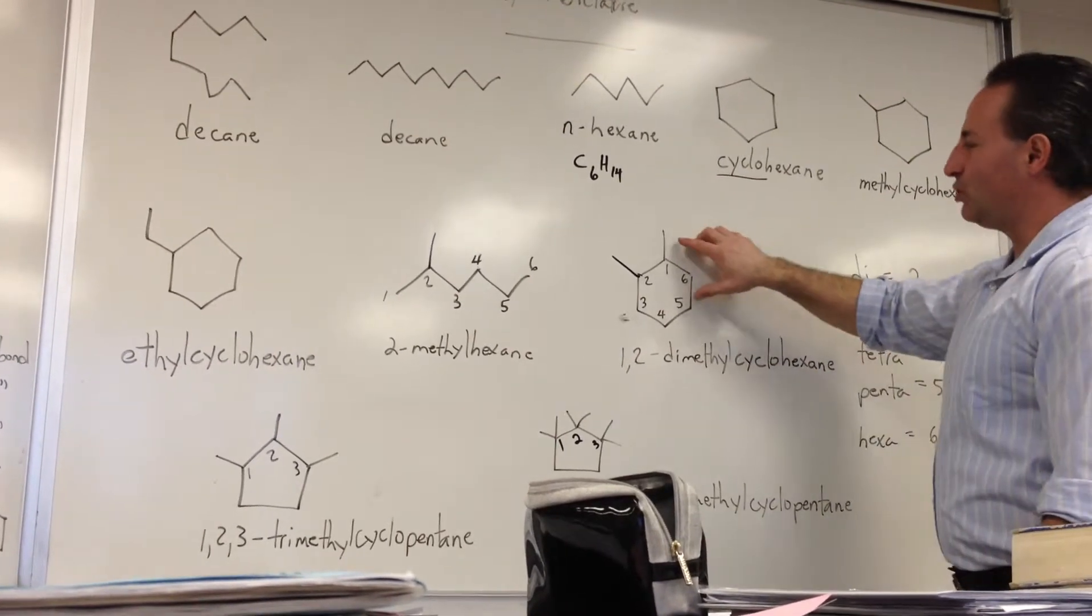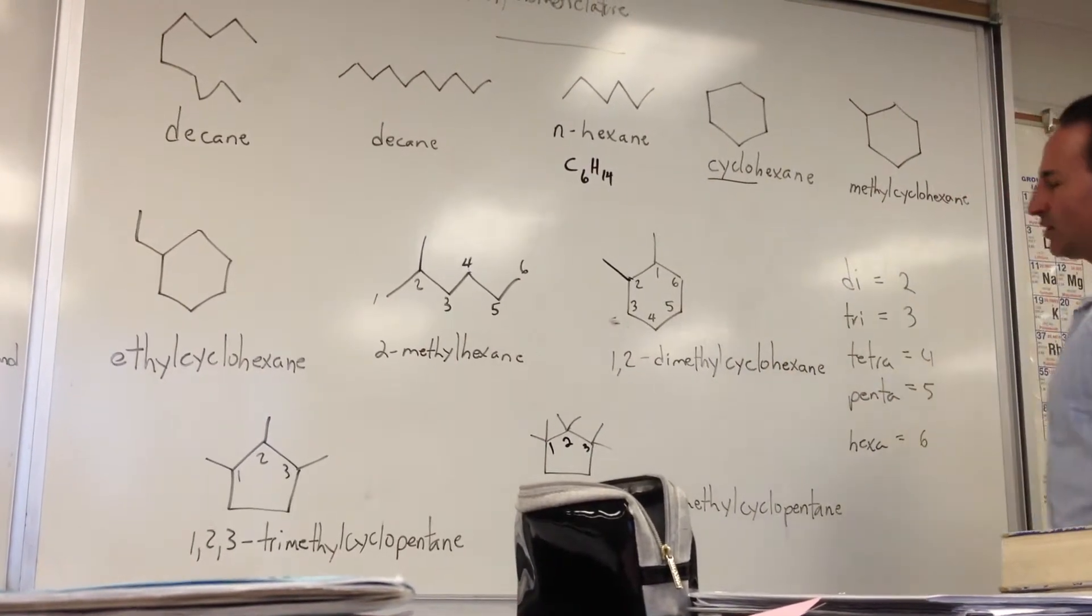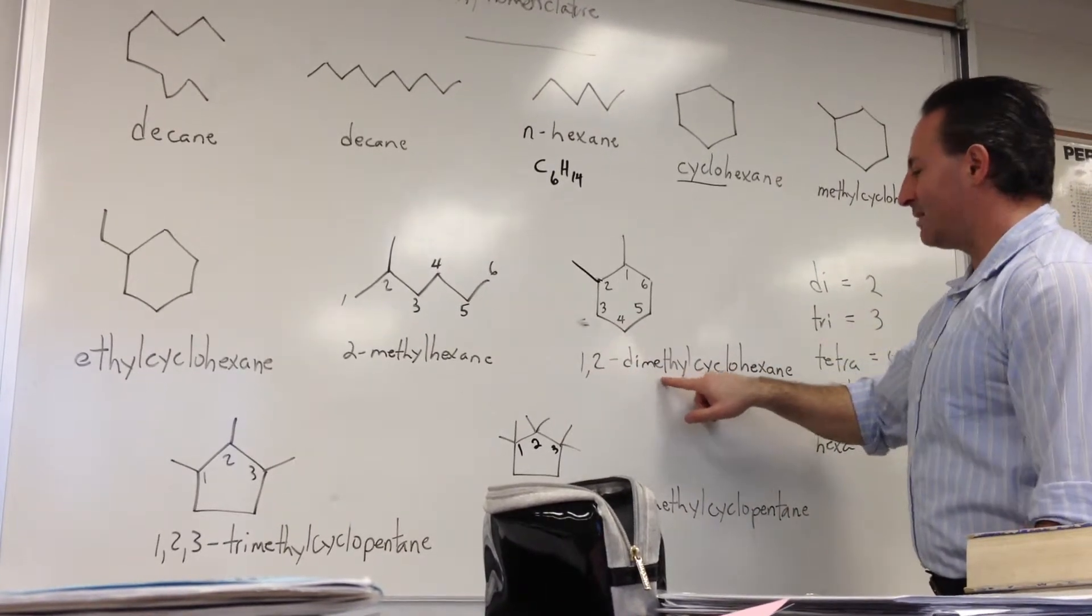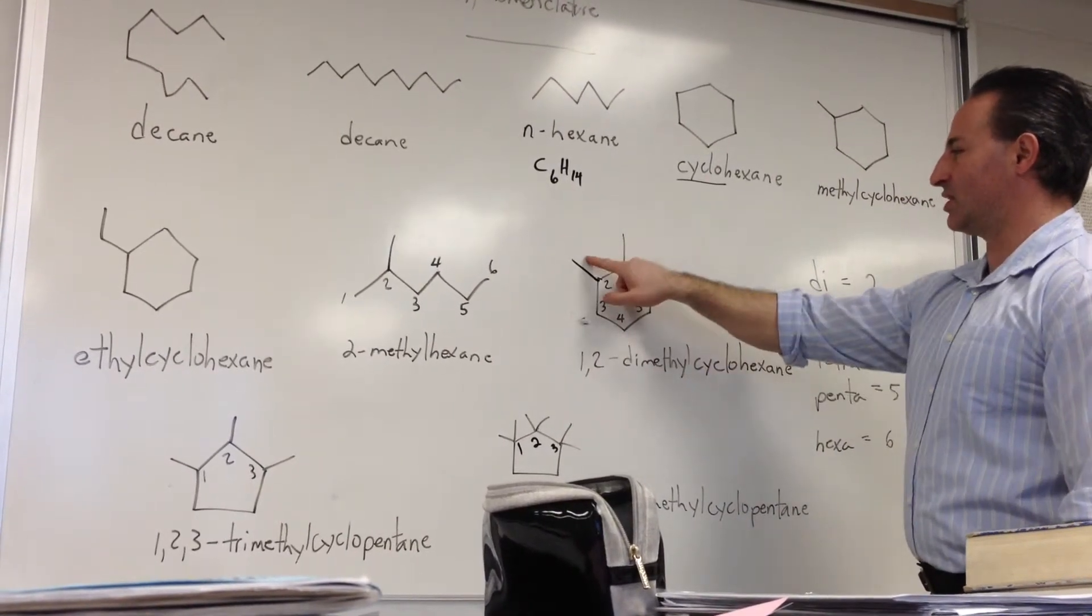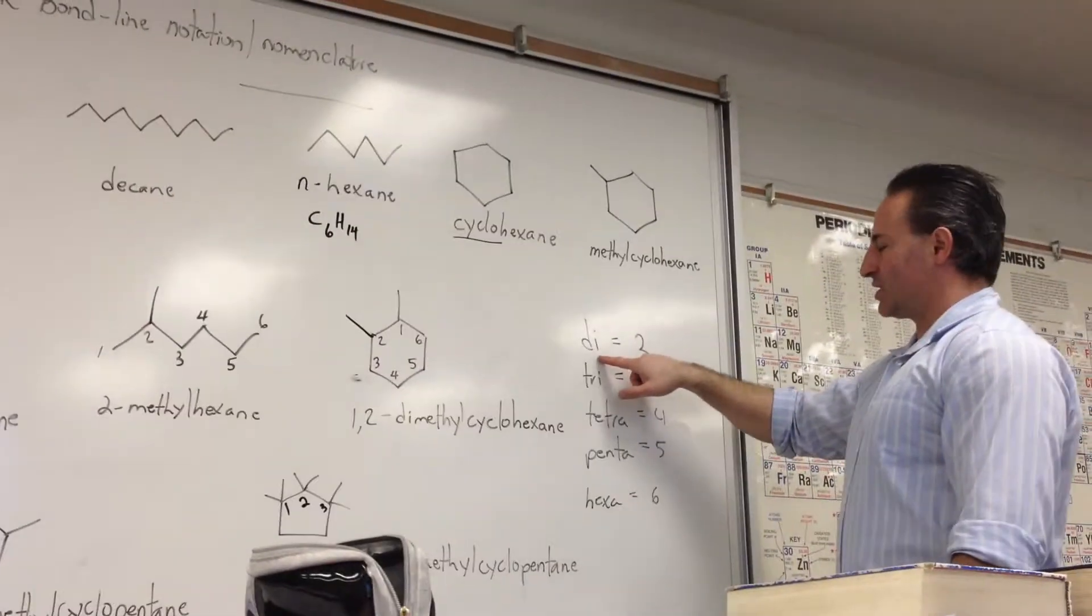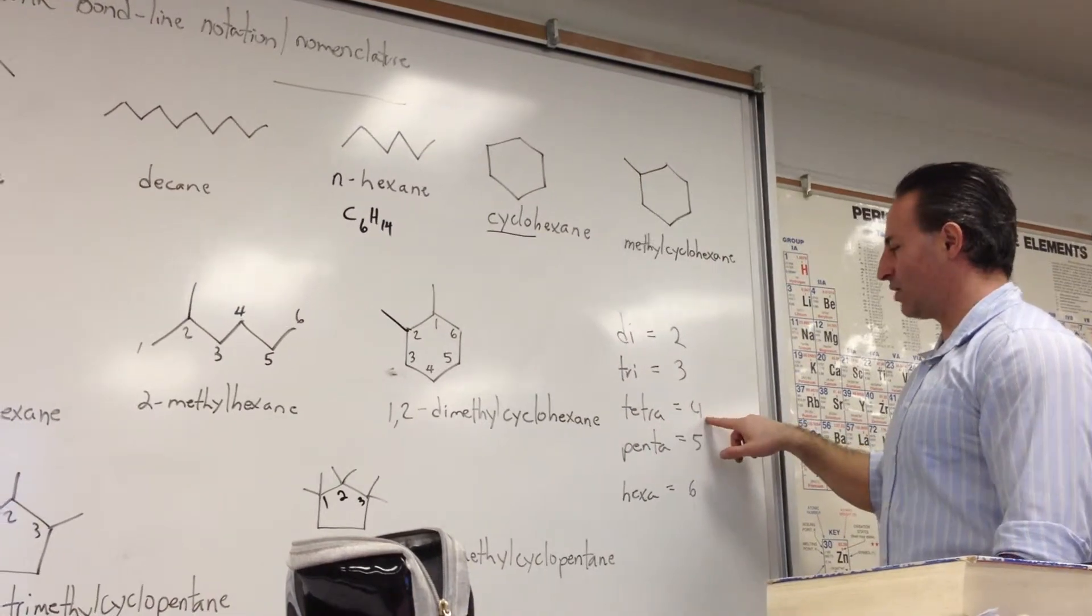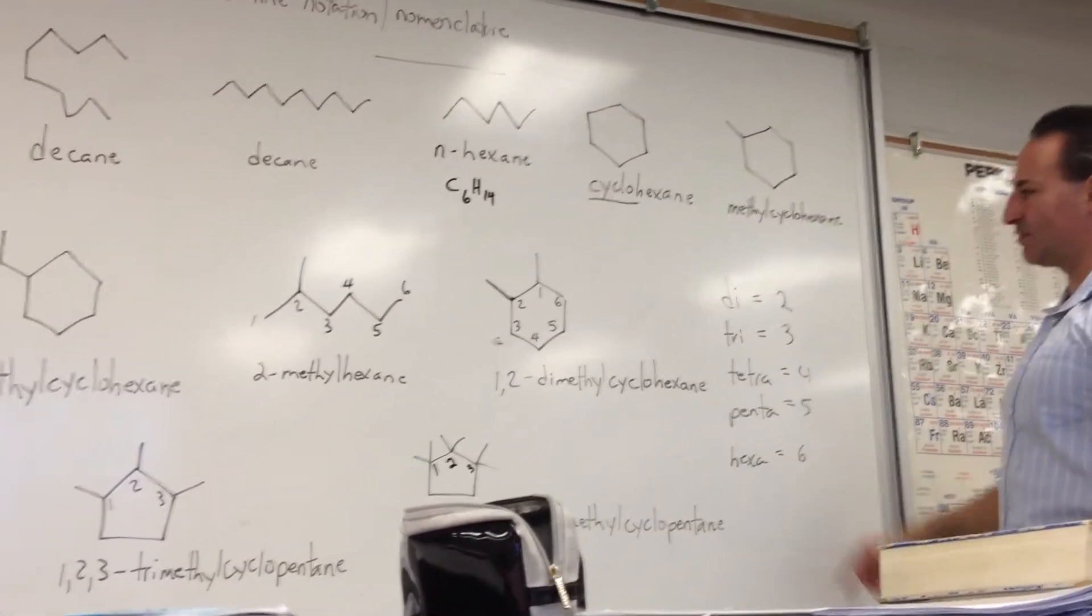If you have, for example, 2 methyl groups on a molecule, then each one gets its own number. So 1,2-dimethyl. Then you say di because there's 2 of these. And you use the following Greek prefixes to designate how many there are: di for 2, tri for 3, tetra for 4, penta for 5, and hexa for 6.